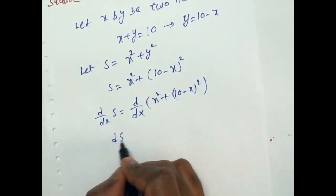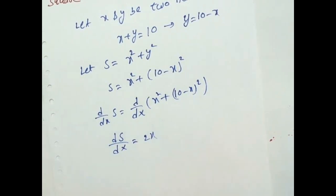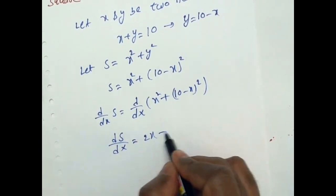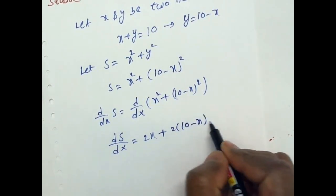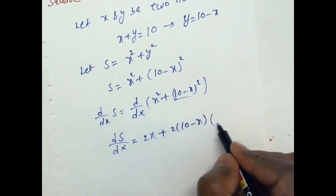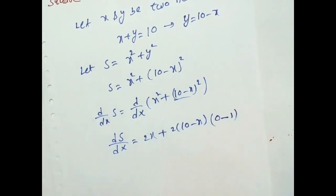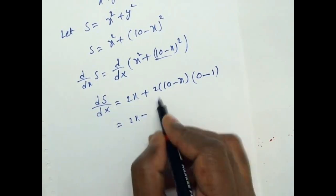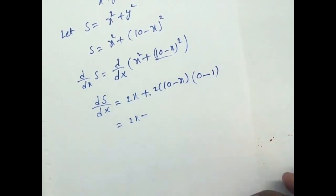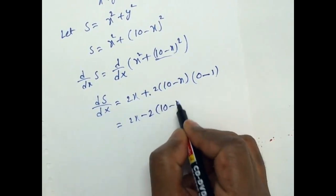That equal to dS by dX is equal to X square derivative 2X. Similarly, 10 minus X full square derivative is 2 into 10 minus X into minus 1. That is equal to 2X plus 2 into minus 1 is minus 2 into 10 minus X.